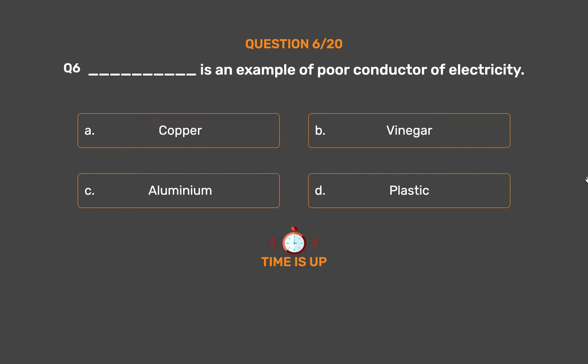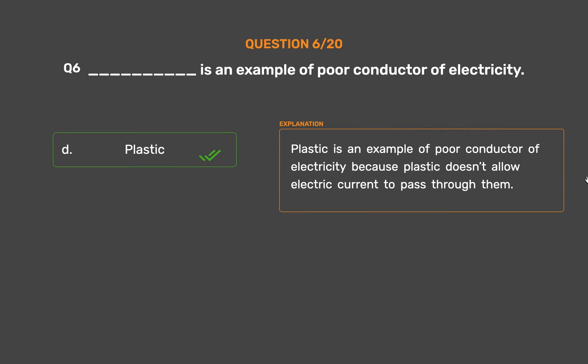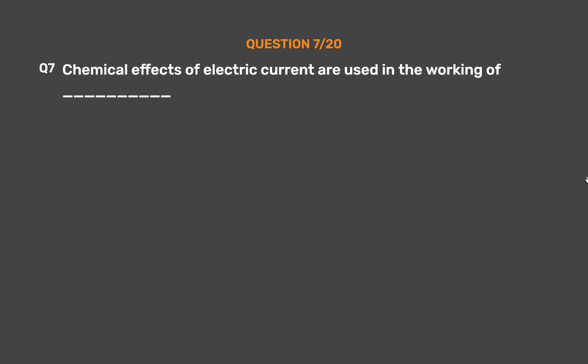The correct answer is Option D: Plastic. Plastic is an example of a poor conductor of electricity because plastic doesn't allow electric current to pass through it.